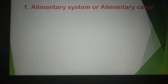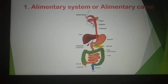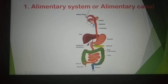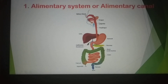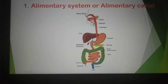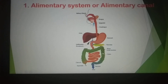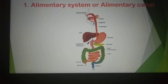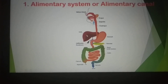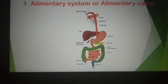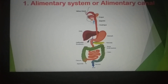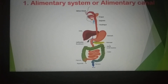The alimentary canal starts from the mouth and ends at the anus. It is a long tube-like structure — some sections tube-like, some sac-like — called the alimentary canal. Associated glands include salivary glands, liver, pancreas, gastric glands, small intestinal glands, and large intestinal glands, all included in the alimentary glands.